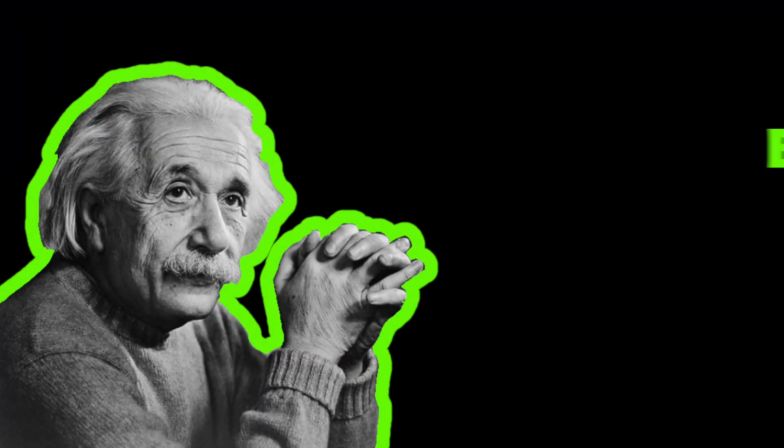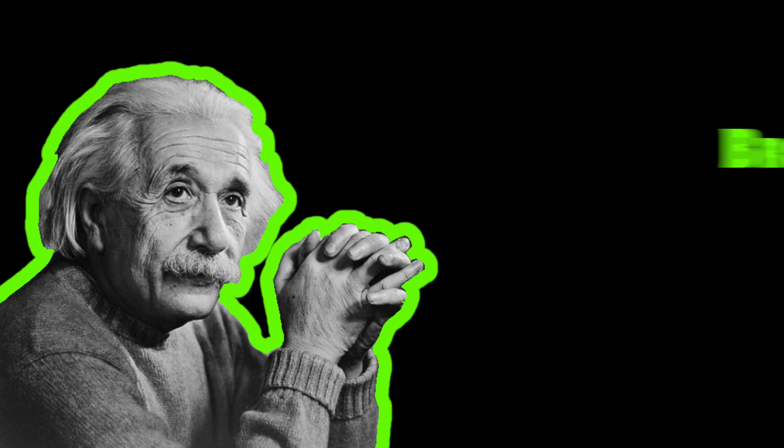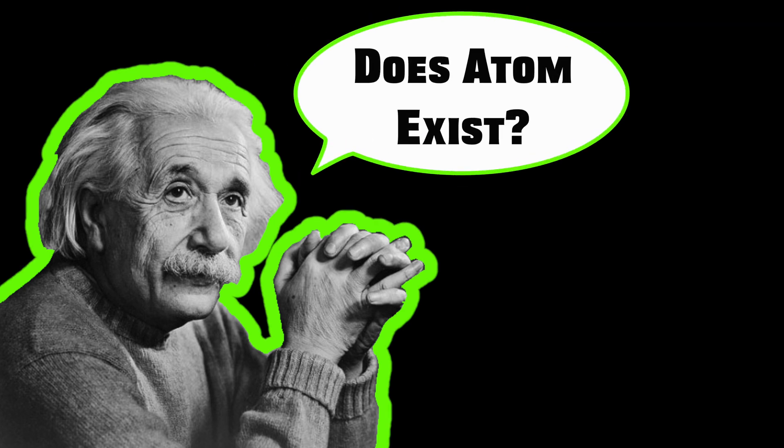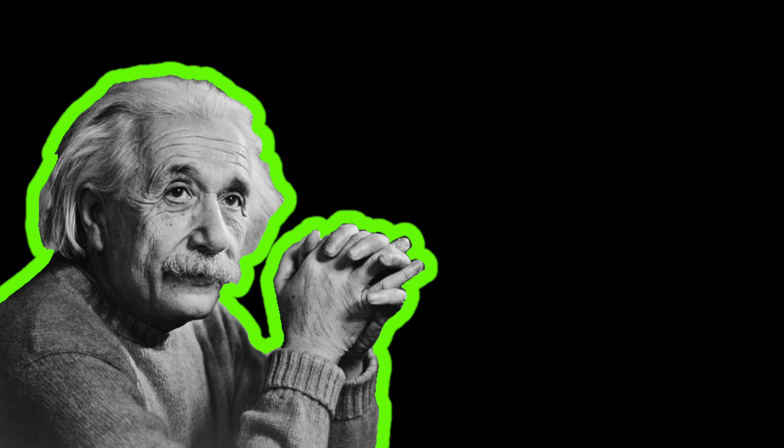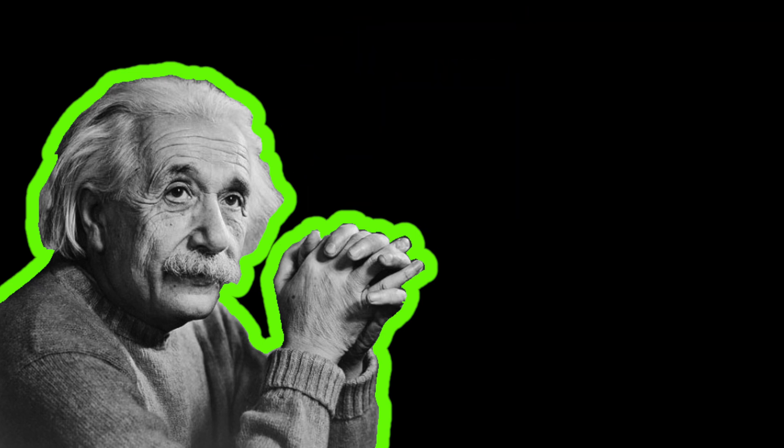You might wonder why Einstein was interested in Brownian motion in the first place. Well, what Einstein wanted to do, actually, was to find facts that would guarantee the existence of an atom. And his paper, published in 1905 on the molecular mechanisms of Brownian motion, established the existence of atoms even though you cannot see them directly.